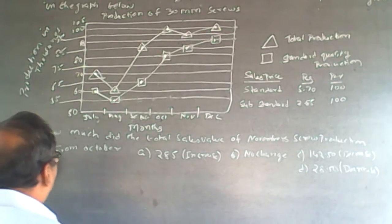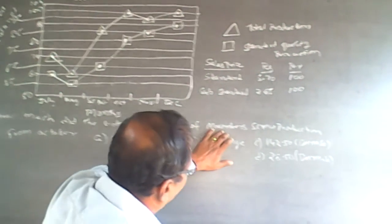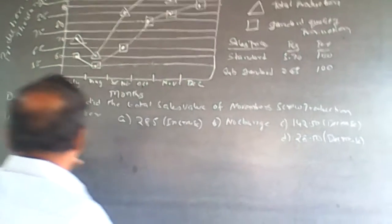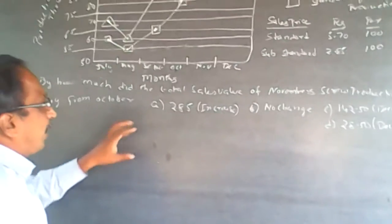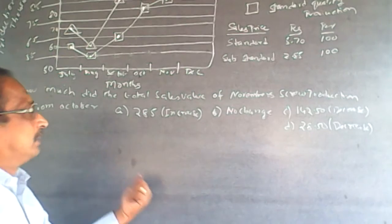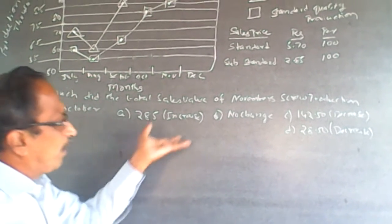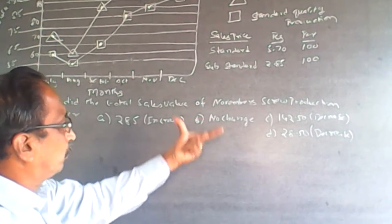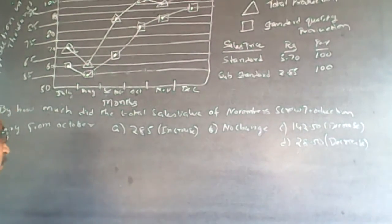The question is: by how much is the total sales value of November screw production vary from October? So you will have to find out the October production — both standard and substandard — and similarly find out November production, both standard and substandard, and then find out the difference.